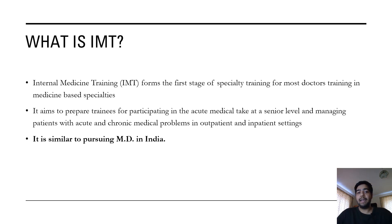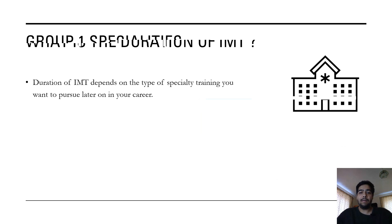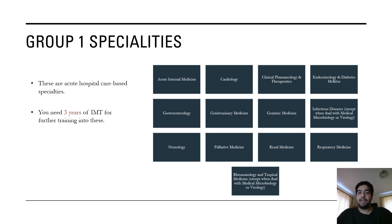This is similar to pursuing an MD in India. What is the duration of IMT in the UK? The duration of IMT depends on what type of specialty you want to further train in. There are two types: Group 1 specialties and Group 2 specialties. Group 1 specialties are acute, hospital care-based specialties, and you need three years of IMT for further training into these.